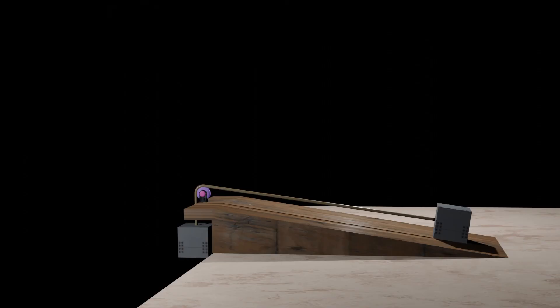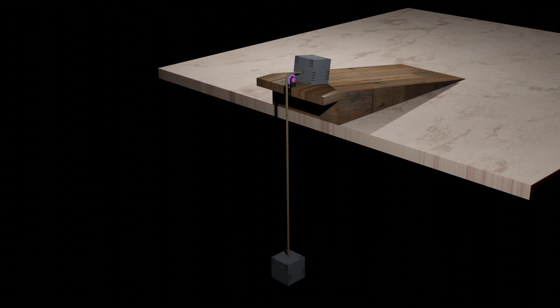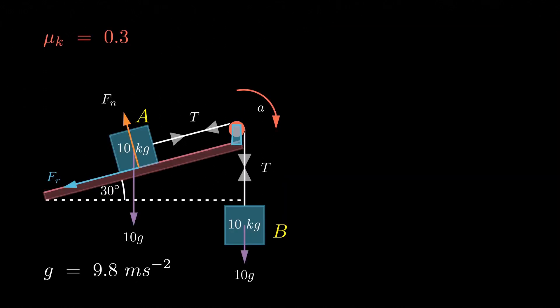Let's delve into the motion of two objects, each with a weight of 10 kilograms, attached to either side of a string. The object at the far end of the ramp is descending, while the object attached to the other end of the rope is sliding up on the ramp. The ramp itself is inclined at 30 degrees to the horizontal, and the coefficient of kinetic friction for the contacting surfaces is 0.3. Our goal is to calculate the acceleration of both objects. The acceleration of object A is along the plane, while the acceleration of object B is directed towards gravity.